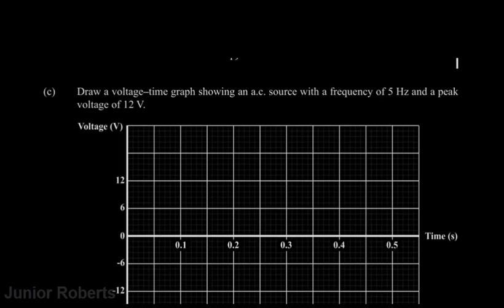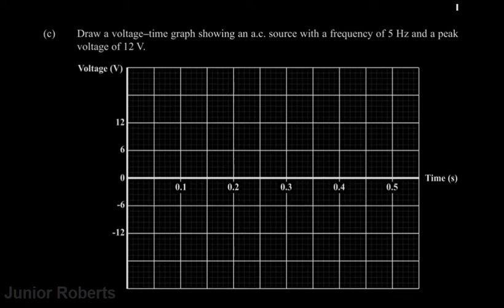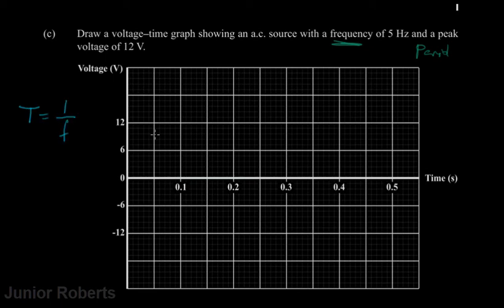The next question asks us to draw a voltage-time graph for an AC source with a frequency of 5 Hz and a peak voltage of 12 volts. When plotting a voltage-time graph we need the frequency and the period. The period T equals 1 divided by f. Since frequency is 5 Hz, our period T equals 1 divided by 5 Hz, which gives us 0.2 seconds.